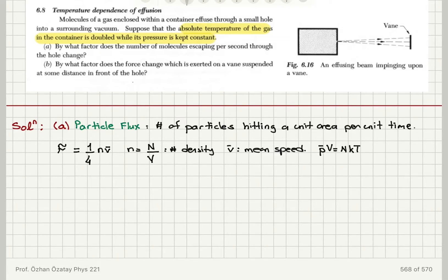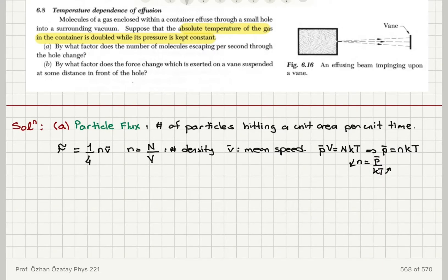Since this is an ideal gas, PV = NkT, so the pressure p̄ equals the number density n times kT. Therefore n = p̄/(kT). If the temperature is doubled at constant pressure, n decreases — so n is multiplied by a factor of one-half, meaning it decreases by a factor of two.